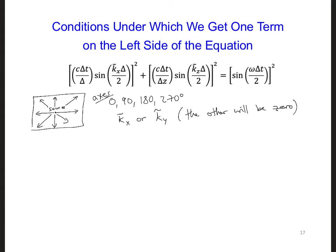So this leaves us with just one term on the left side. We'll have c delta t over delta, and sine k delta over 2. And the right side is the same.